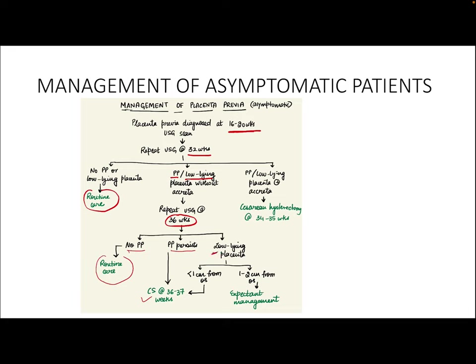For a low-lying placenta whose edge is within 2 centimeters of the internal os, management depends on the actual distance: if 1 to 2 centimeters from the os, you can go for expectant management; if less than 1 centimeter, plan a cesarean at 36 to 37 weeks. If the ultrasound at 32 weeks shows placenta previa or low-lying placenta with a placenta accreta spectrum, proceed with a cesarean hysterectomy scheduled for 34 to 35 weeks of gestation.